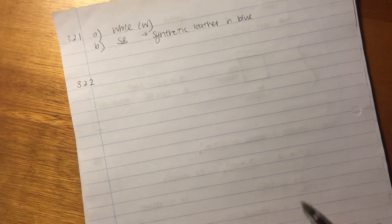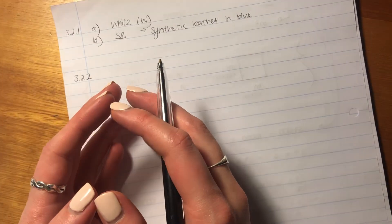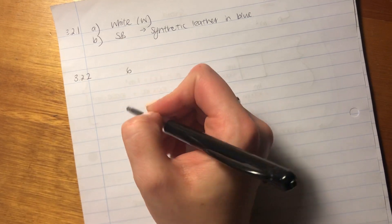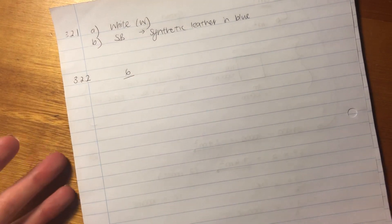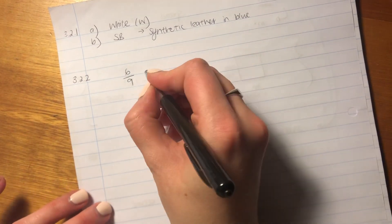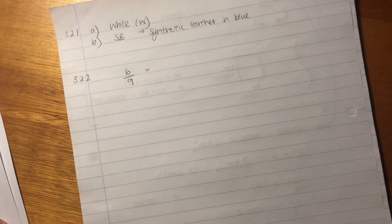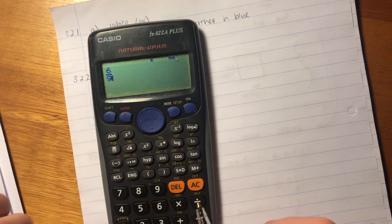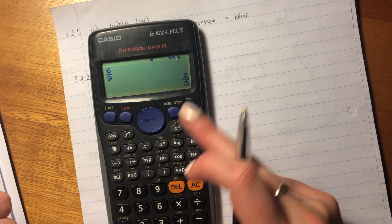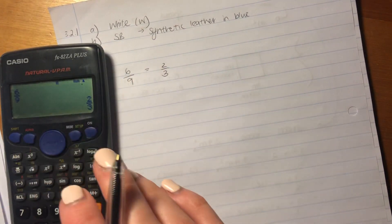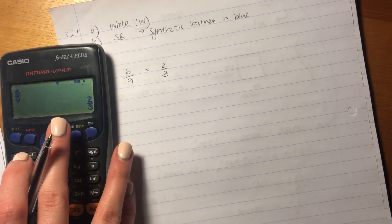So our probability, remember probability is always how many different ways can we get what we want, in this case not red. There's 6 ways we can get that over the total number of different events we can get, which is 9. Remember, that's how probability works. It's said in simplest form. If you can't do this in your head, don't stress, put it in your calculator and your calculator gives it to you in simplest form. So it is 2 over 3. That is its simplest form.